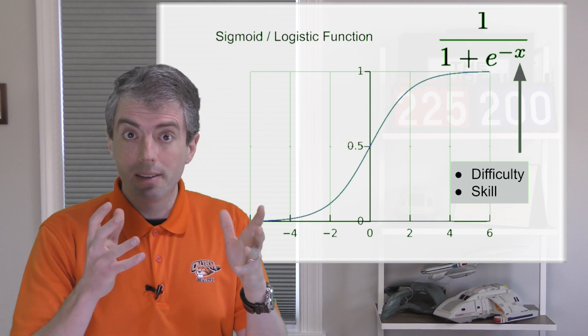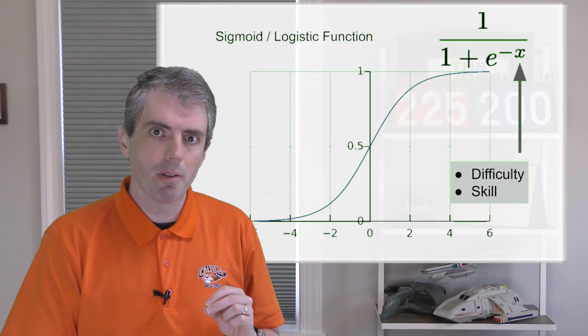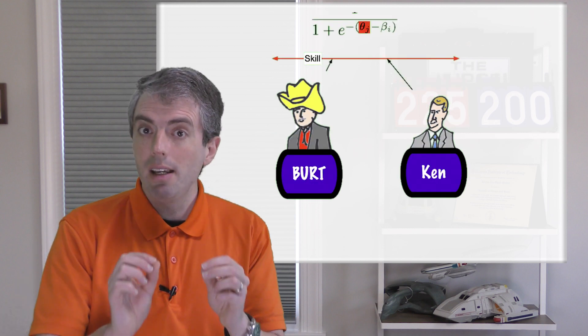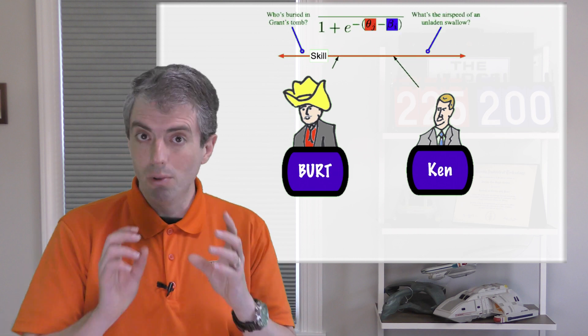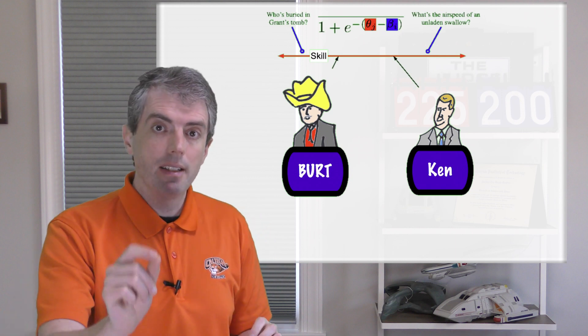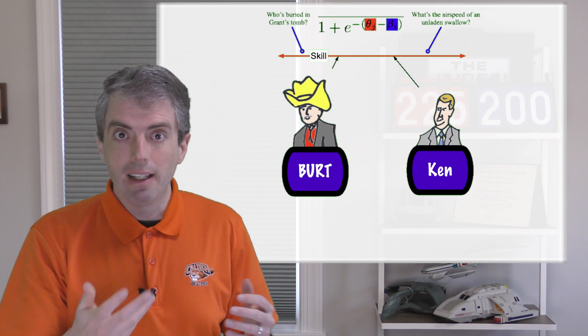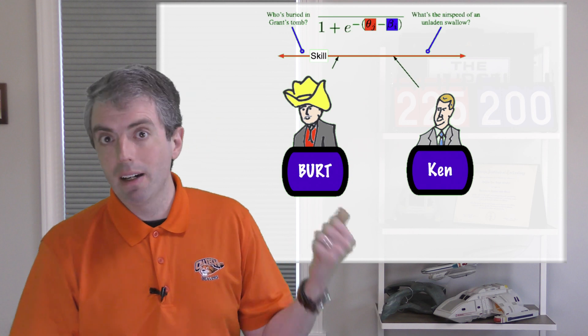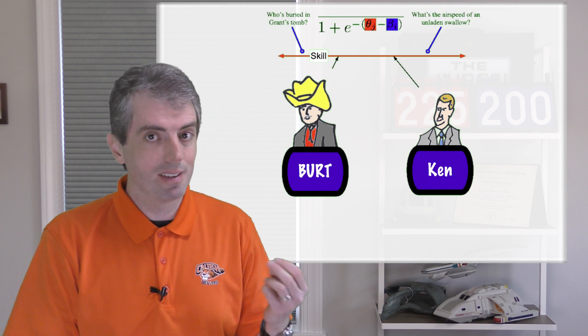People or systems, when we talk about computers, have different skills. Let's assume that we have two subjects trying to answer the questions: Kin, who's quite good, and Bert, who's not quite as sharp. The higher the skill theta, the more likely they are to answer questions correctly. On the same scale as the subject's skill is the difficulty of the questions. We'll call this beta. The higher the difficulty of a question, the more skill you need to answer it. What is the airspeed of an unladen swallow has high difficulty. Who's buried in Grant's tomb has low difficulty.